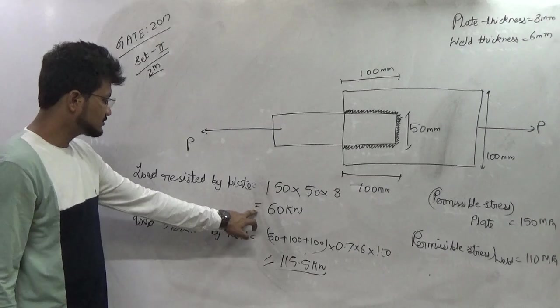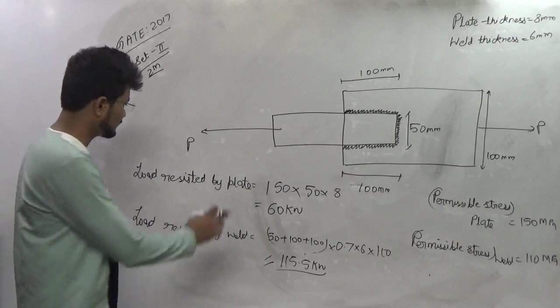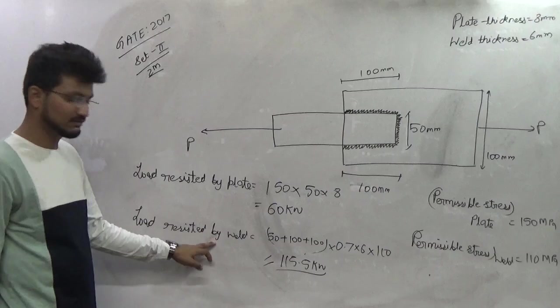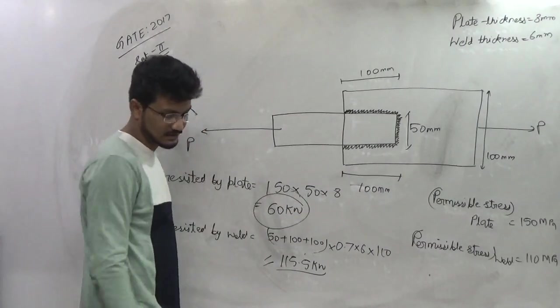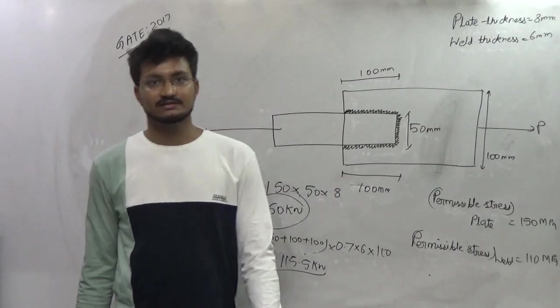So these two load values we are getting by plate and by the weld. So minimum of these two will be the required permissible load which is 60 kN. Therefore 60 is the right answer.